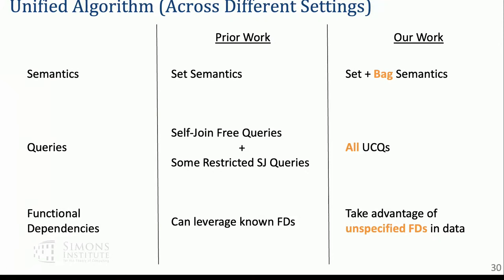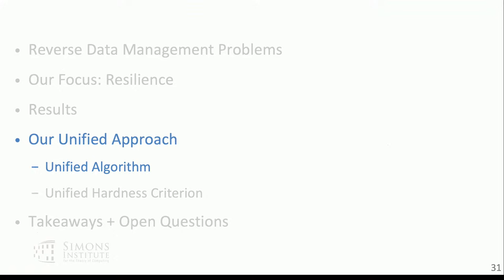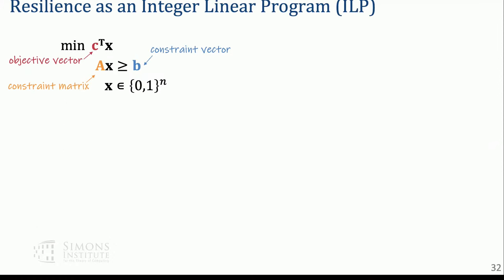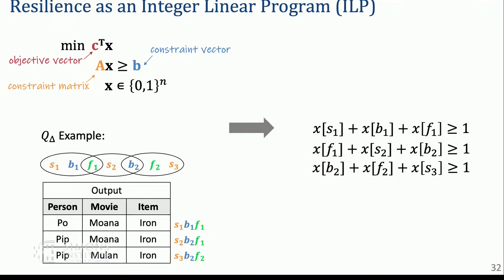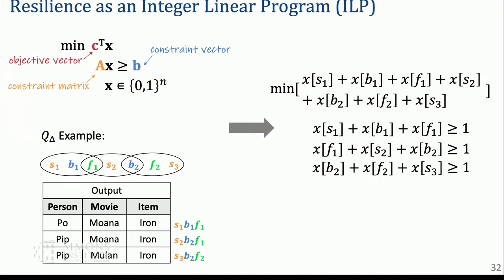The unified algorithm is an integer linear program. We take our resilience problem and model it as an ILP with constraints and a linear objective. For each hyperedge you want to delete some tuple: for all three witnesses you must delete at least one of the tuples. We minimize the number of tuples deleted. For each tuple, either you delete it (1) or you don't (0) — that's the integer part. Solving this gives the answer 2. With self-joins you do the exact same encoding. For bag semantics, you just add the number of copies to the objective.